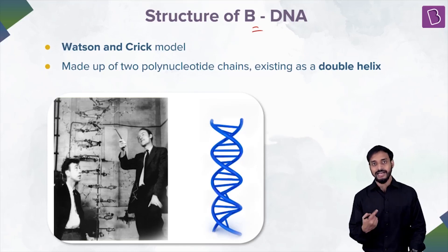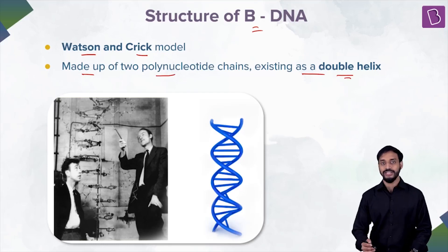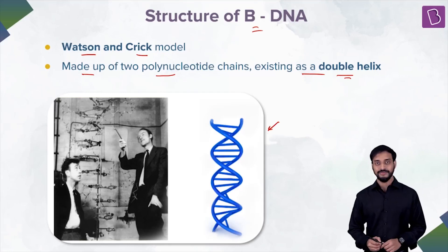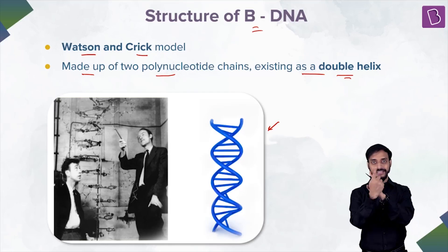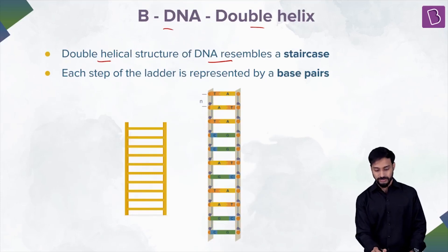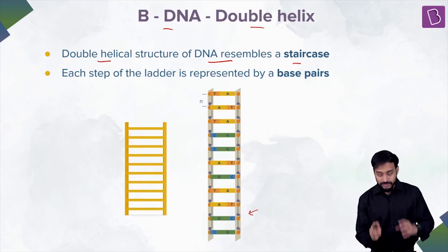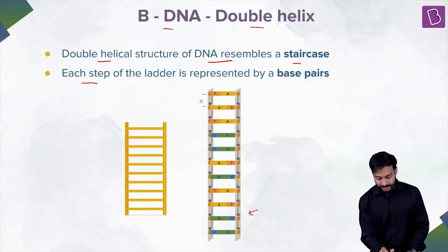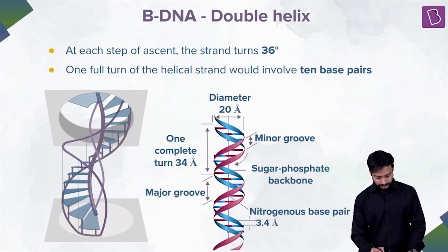Now let's look at the structure of B-DNA — the Watson and Crick model. DNA exists as a double helix, made up of two polynucleotide chains. The double helical structure resembles a spiral staircase. Imagine looking at a spiral staircase from the top and twisting it — each step of the ladder represents a base pair, with the nitrogenous bases (nucleotides) connected by hydrogen bonds, either GC or AT.